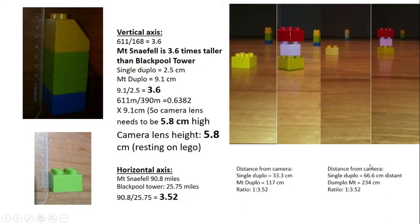And this one over here is double the distance. So everything's double distance. The first one is 66.6 centimeters and the distance to the second is 234 centimeters and the ratio is 3.52 just as we predict.